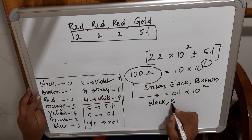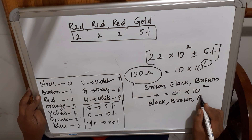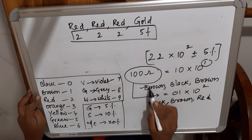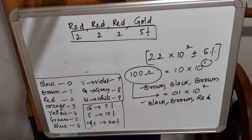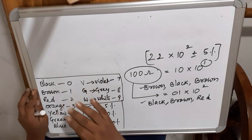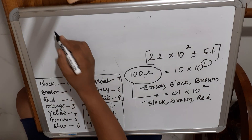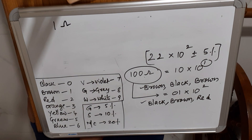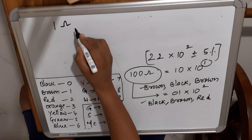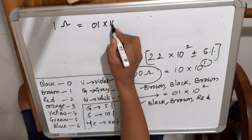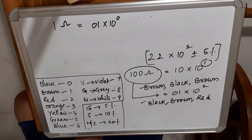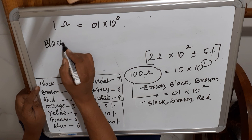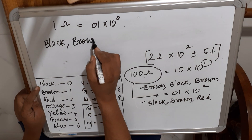Alternatively, 100 ohm can be written as 01 × 10², giving: Black (0), Brown (1), Red (10²). Both representations give the same resistance — two valid color sequences for 100 ohm.